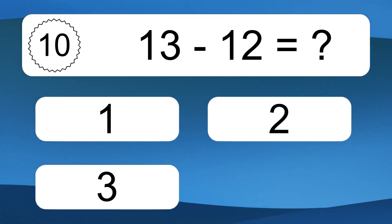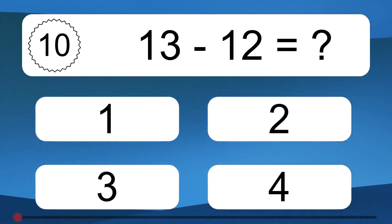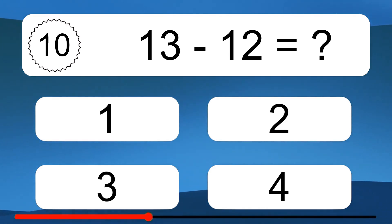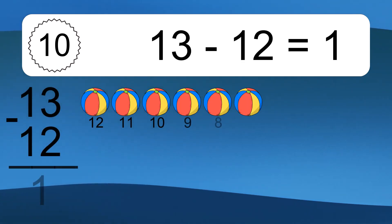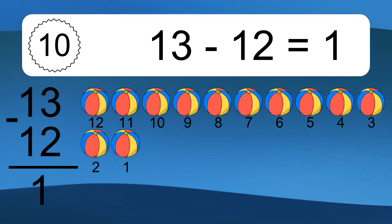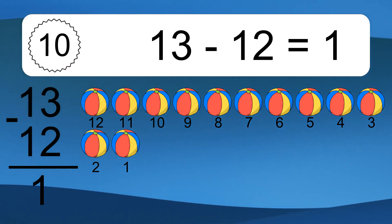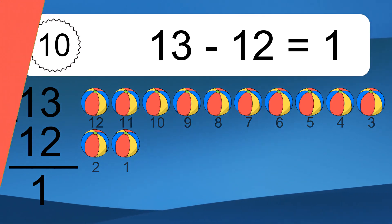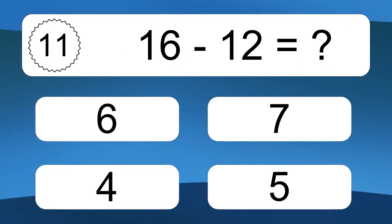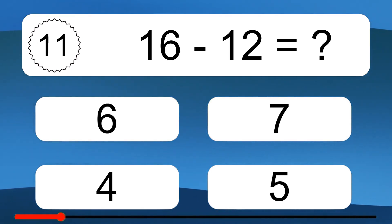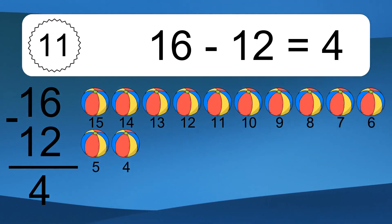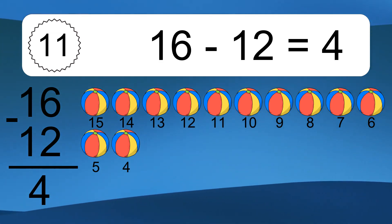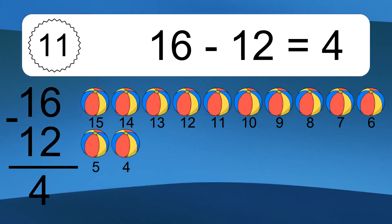13 minus 12 equals what? 13 minus 12 equals 1. Let's count it. 12, 11, 10, 9, 8, 7, 6, 5, 4, 3, 2, 1. 16 minus 12 equals what? 16 minus 12 equals 4. Let's count it. 15, 14, 13, 12, 11, 10, 9, 8, 7, 6, 5, 4.